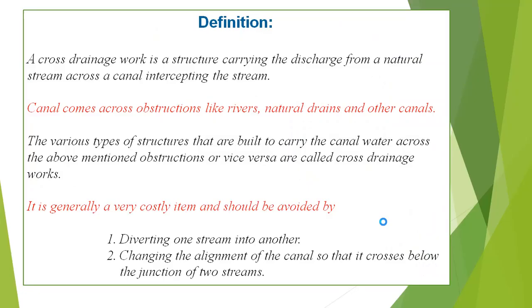A definition of cross-drainage work: it is a structure carrying the discharge from a natural stream across a canal intercepting that stream. When a canal comes across an obstruction like a river, natural drain, or another canal, the various types of structures built to carry canal water across such obstructions — or vice versa — are called cross-drainage works.